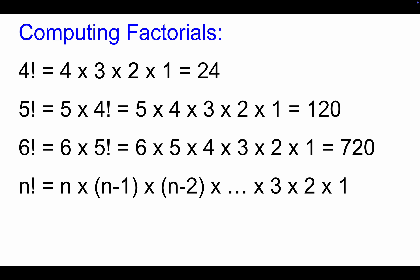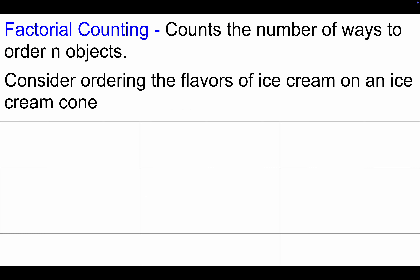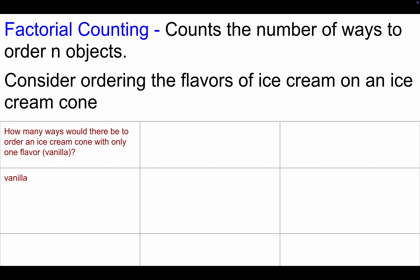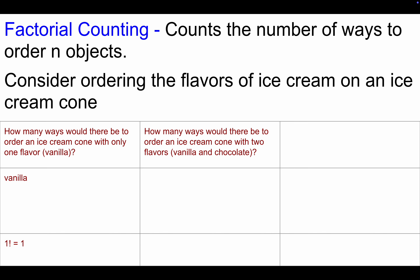Factorial counting counts the number of ways to order n objects. Consider ordering the flavors of ice cream on an ice cream cone. With only one flavor — vanilla — there's really only one way to order it, so that's 1 factorial, or 1 way. With two flavors, you could do vanilla then chocolate, or chocolate then vanilla. That gives us 2 factorial, which equals 2 times 1, or 2 ways.